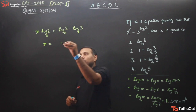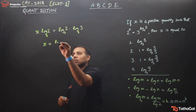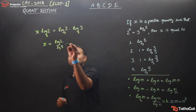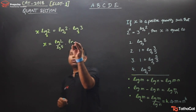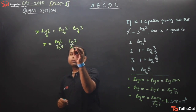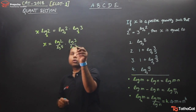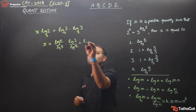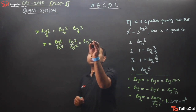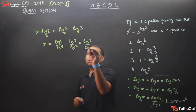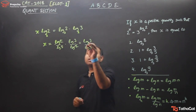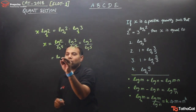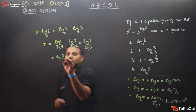This is log 2 upon log 5, and this one is log 3 upon log 2. So this log 2 cancels, and I am left with log 3 upon log 5, which can be written as log of 3 to the base 5.